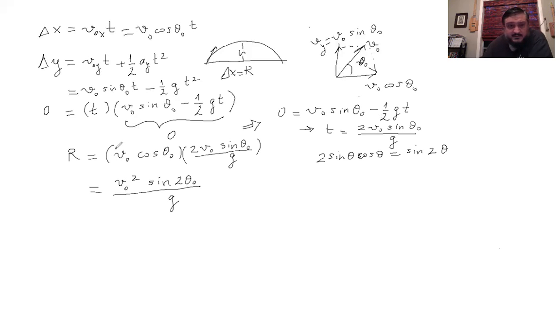But what about the maximum R? R is obviously a function of theta naught now. Assuming V naught is your maximum kick power, that is fixed. But we can always change theta naught. So how do we find the maximum R? Or in other words, which theta, what angle, makes R a maximum? And to find that, we got to remember what the sine function looks like. This is the sine function.